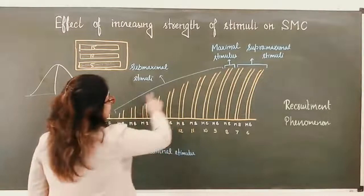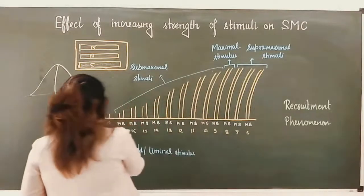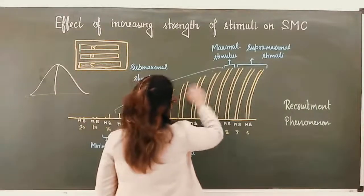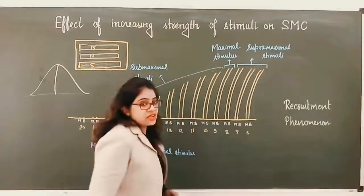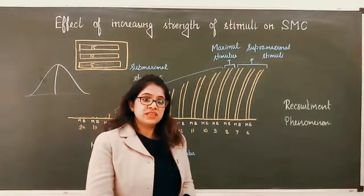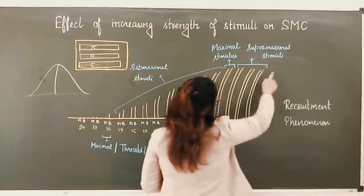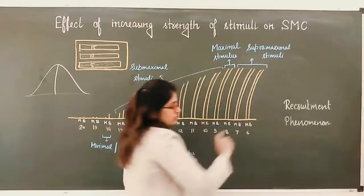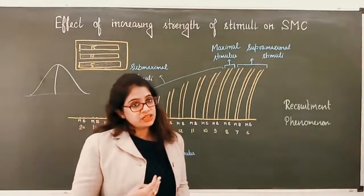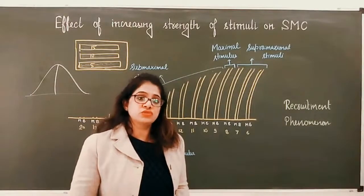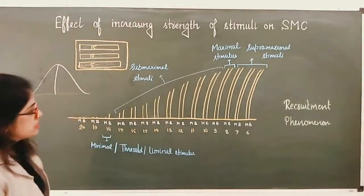Submaximal stimuli are the responses between the threshold stimulus and the maximal stimulus. Supramaximal stimuli are the responses after the maximal stimulus. Here these are supramaximal stimuli — we kept on increasing the strength of stimuli but there was no change in the height of curves, or in other words, no change in the force of contraction of the muscle.